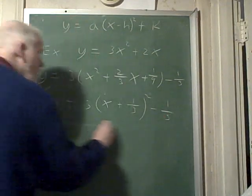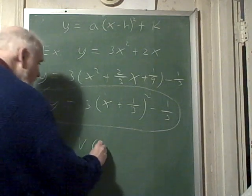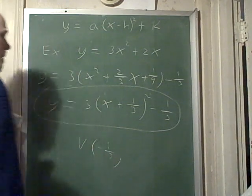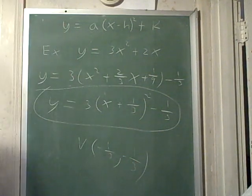And you're done. The vertex in this case is negative 1 third comma negative 1 third. Did we do everything right? I think we did.